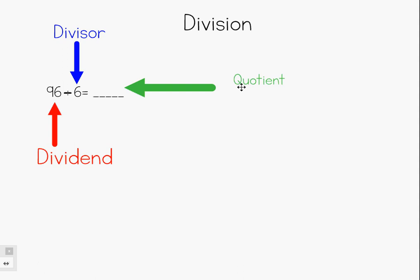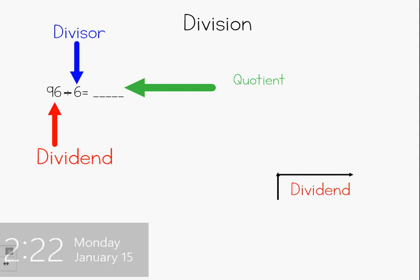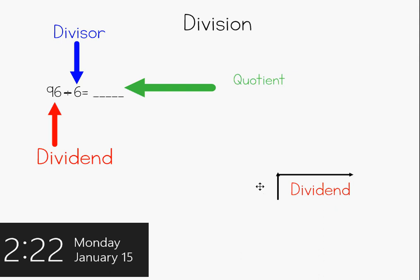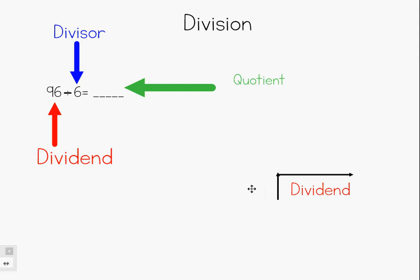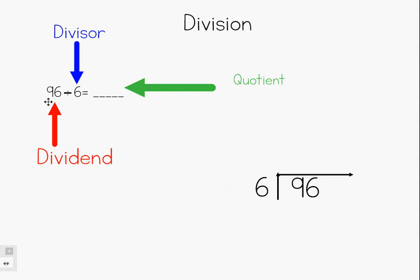Our answer, which we don't know yet, is called our quotient. A quotient is the answer to a division problem. You may see division problems written in what I like to call the house. When we do long division, we are going to use this strategy. Inside the house will go your dividend, on the outside will be your divisor, and your answer — your quotient — will be on top. So we can rewrite 96 divided by 6 to look like this.